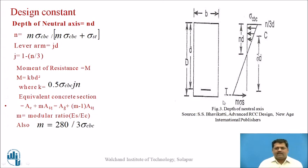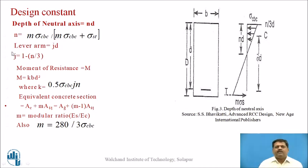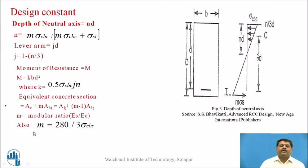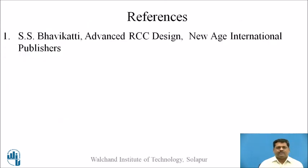These are the design constants. For a rectangular section, the neutral axis depth ratio is n = m·σ_cbc / (m·σ_cbc + σ_st). The lever arm is j·d, where j = 1 - n/3. The moment of resistance is M = k·b·d², where k = 0.5·σ_cbc·j·n. The modular ratio m = 280 / (3·σ_cbc). These are the working stress design constants used in the design of water tanks, as per IS code. Thank you.